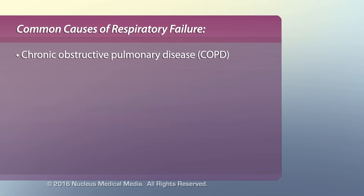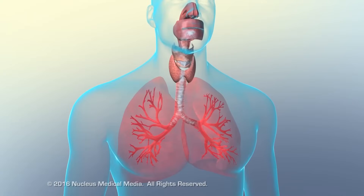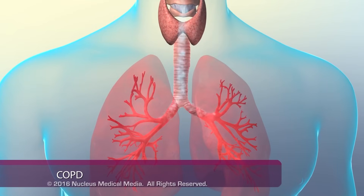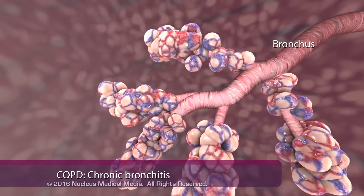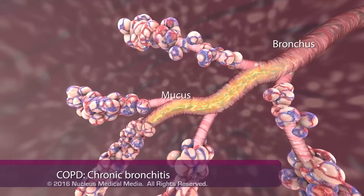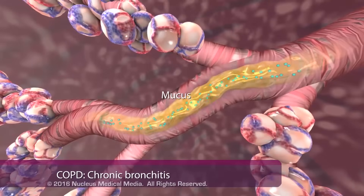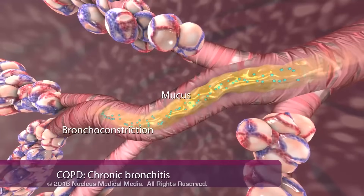Chronic obstructive pulmonary disease, known as COPD, and acute respiratory distress syndrome, known as ARDS, commonly result in respiratory failure. COPD includes two main conditions: chronic bronchitis and emphysema. Chronic bronchitis involves inflammation of the bronchial lining, thick mucus accumulation along the bronchial lining, and narrowing of the airways called bronchoconstriction, which can result in blocked or narrowed airways.